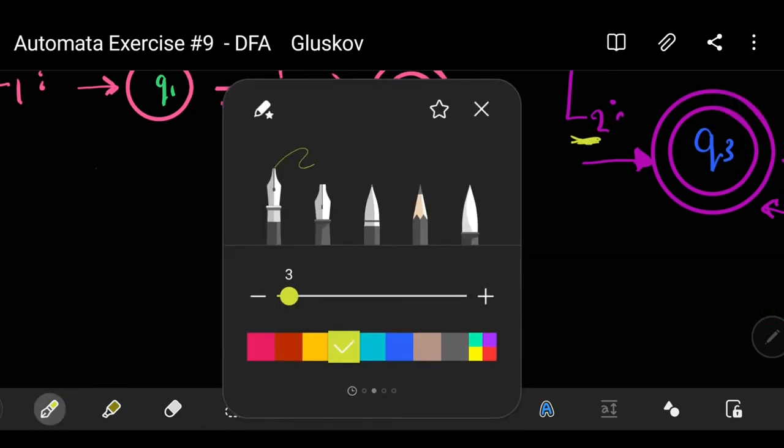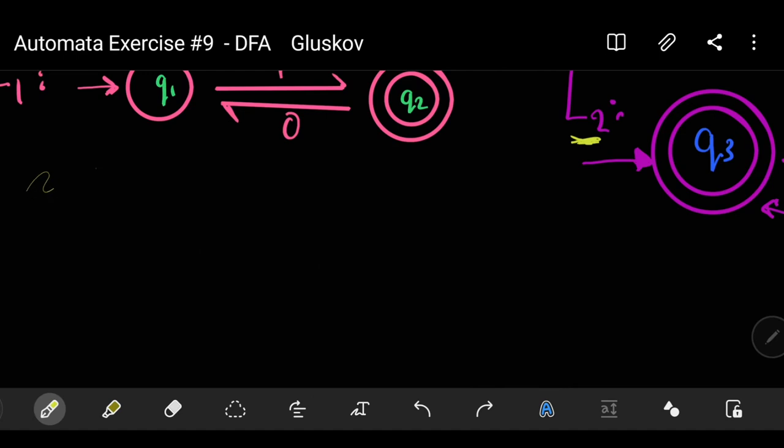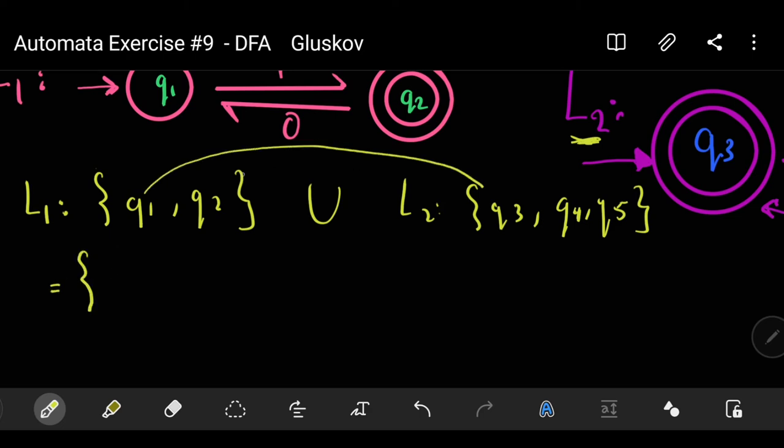So we start by making a set. What is this set? The set is responsible for getting all the possibilities of our union. So L1 contains Q1 and Q2, and L2 contains Q3, Q4, and Q5.